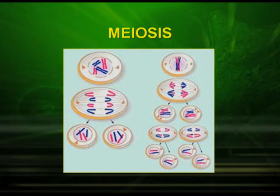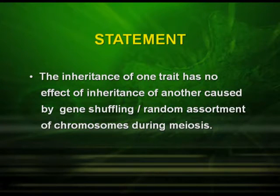That means there is random alignment of the chromosomes. This can be very well understood with the help of meiosis — where there is separation of homologous chromosomes, and during the metaphase and anaphase, there is alignment of the chromosomes. So there is the same analogy in the dihybrid cross. The law of independent assortment states: the inheritance of one trait has no effect on the inheritance of another, caused by the random assortment of chromosomes during meiosis.